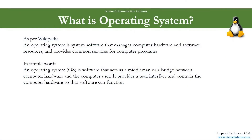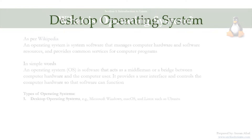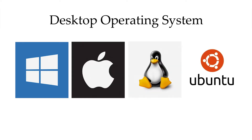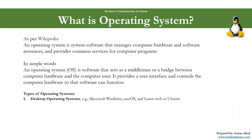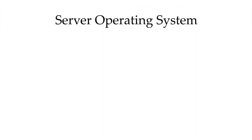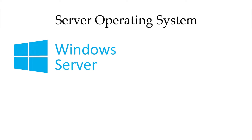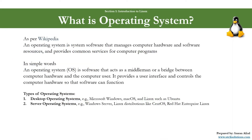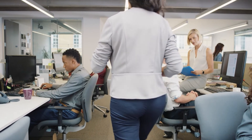Now let's go over the different types of operating systems. The first one is desktop operating systems — these are like Microsoft Windows, Mac OS, and Linux such as Ubuntu. They run on your regular computer or laptop that you are using probably every day at home or in the office. Then you have server operating systems, for example Windows Server, and Linux distributions like CentOS, Red Hat, SUSE, and so on. These types of operating systems run in corporate or enterprise level environments.